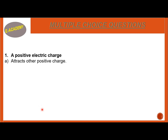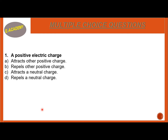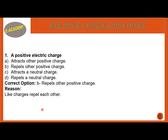MCQ Number 1: A positive electric charge. Option A: attract other positive charge. Option B: repel other positive charge. Option C: attract a neutral charge. Option D: repel a neutral charge. The correct option is B, repel other positive charge. One positive charge will repel the other positive charge. Reason: like charges repel each other; unlike charges attract each other. Positive-negative charges attract, negative-negative charges repel, and positive-positive charges repel.